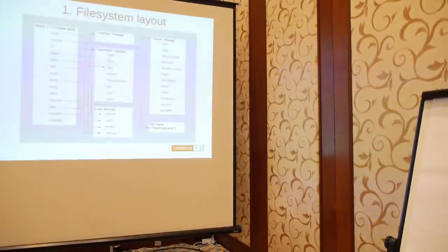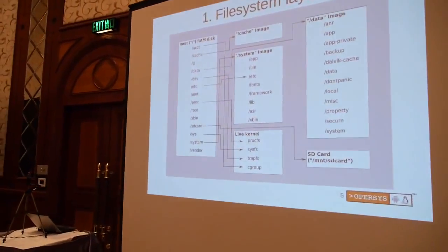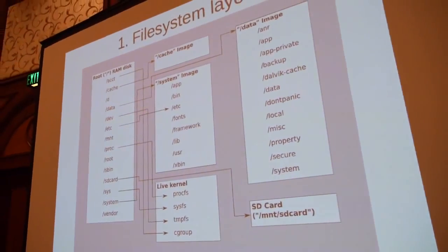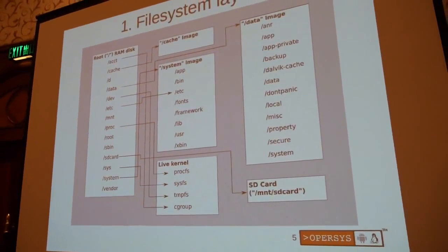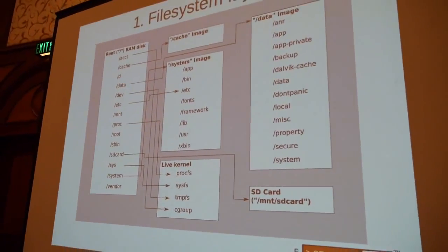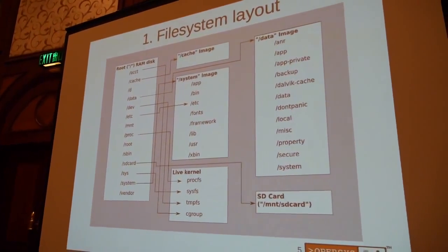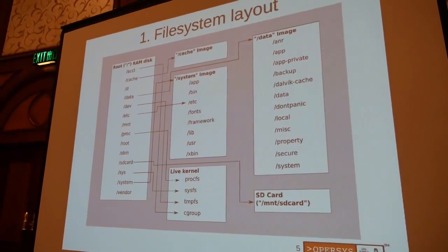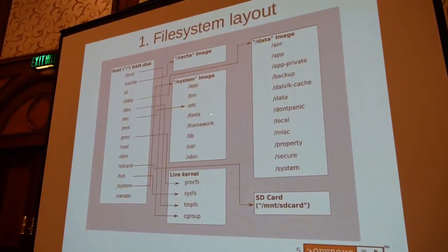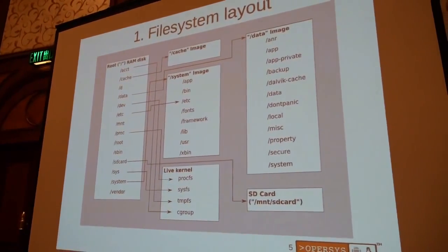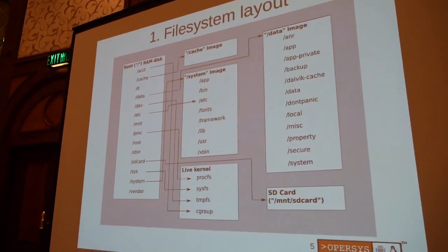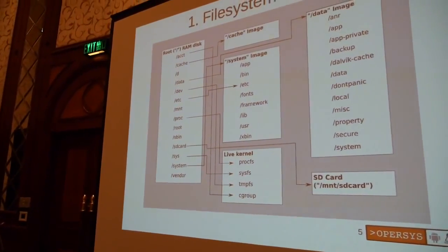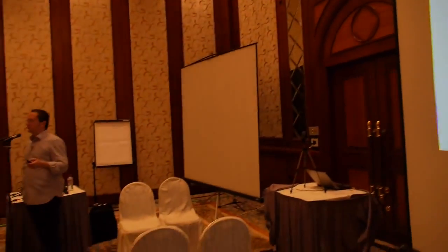Here's the file system layout — this is what you see when you shell into the device. Each of these white boxes is a separate file system image or mount partition. The RAM disk has a bunch of directories and is relatively small, about two megabytes. It mounts a whole bunch of different other file systems. Mainly the two things it mounts are the data image and the system image. For this presentation, I'm using Gingerbread because it's simpler to follow. Jellybean just has a bunch of additions to what I'm going to explain.